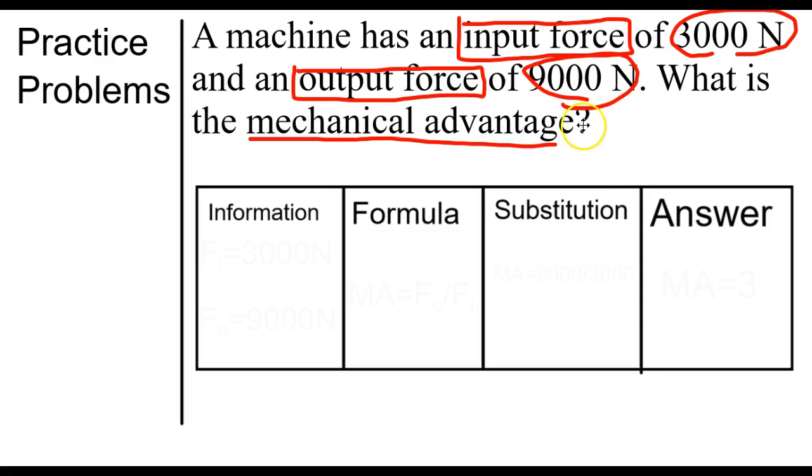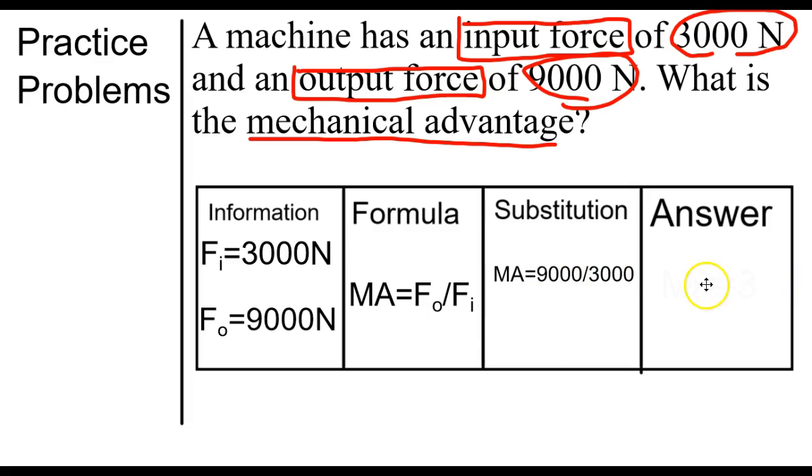We're going to solve for mechanical advantage. Our input is 3,000 newtons and our output is 9,000 newtons. Mechanical advantage is force output over force input, which means 9,000 divided by 3,000. Our answer is 3, with no unit.